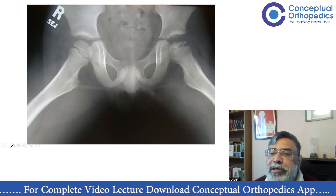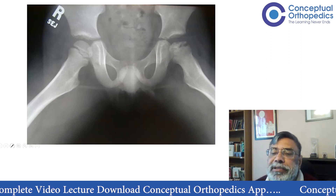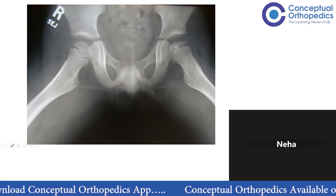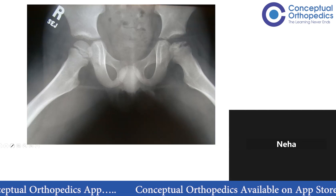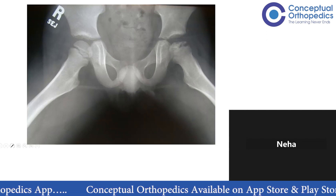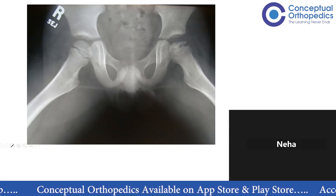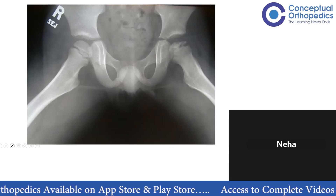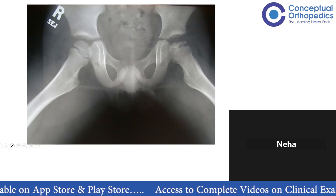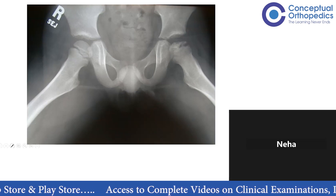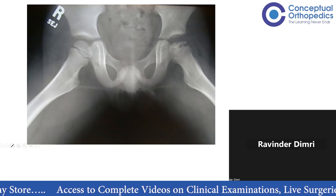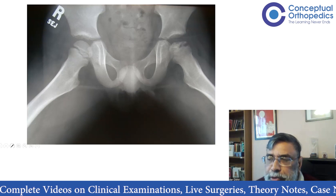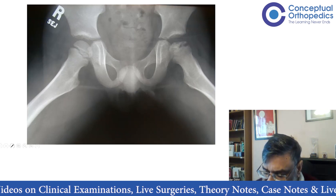So how will you define Perthes, Neha? It is idiopathic, self-limited avascular necrosis of the proximal femoral epiphysis. That's how you define it. So there are a few things already said: idiopathic, self-limiting, avascular necrosis of the femoral epiphysis, occurring in children.